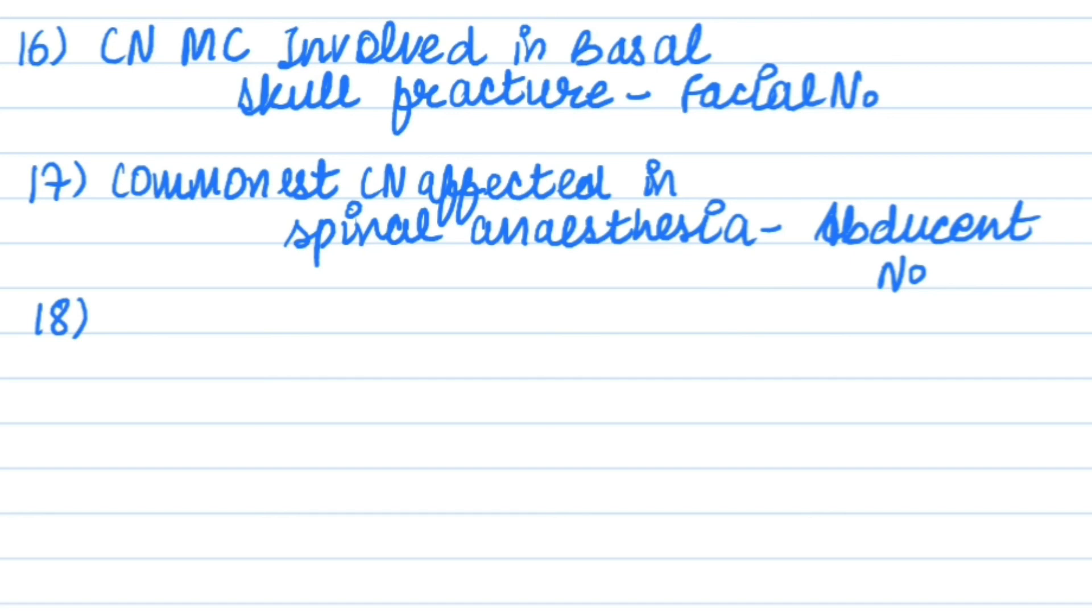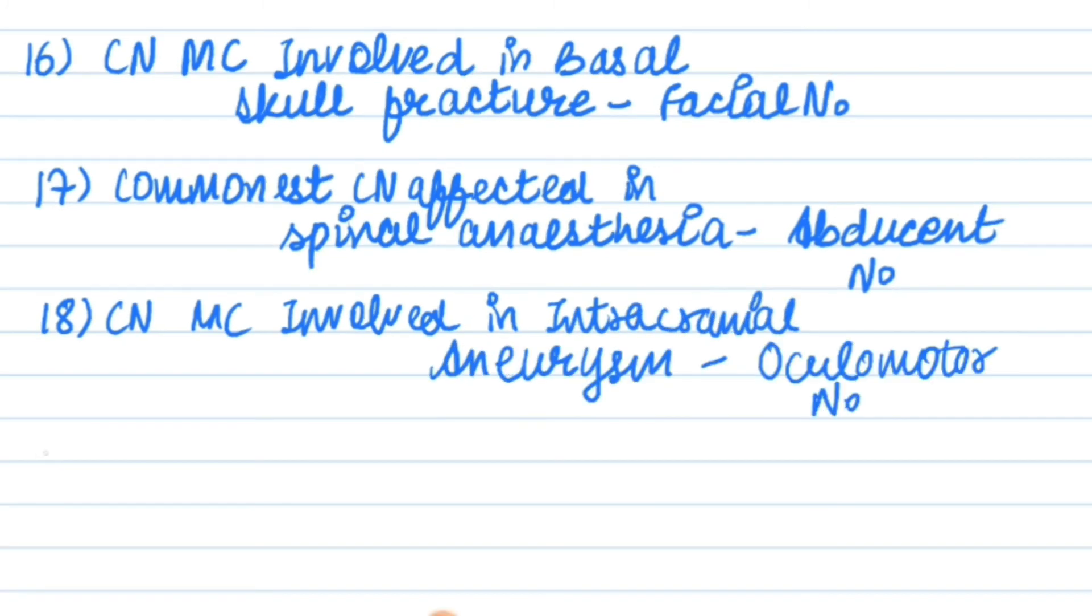Which nerve is most commonly involved in intracranial aneurysm? Parasympathetic fibers are in third cranial nerve, seventh cranial nerve, ninth cranial nerve, and tenth cranial nerve.